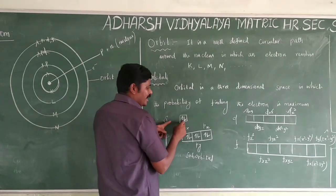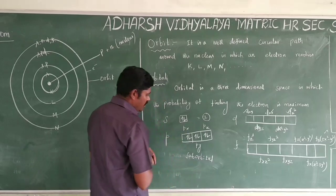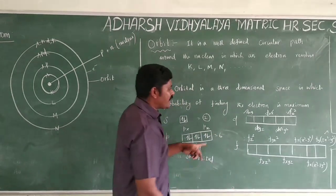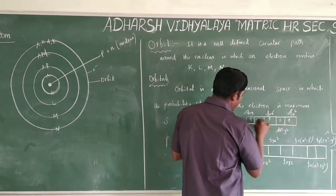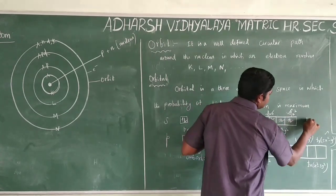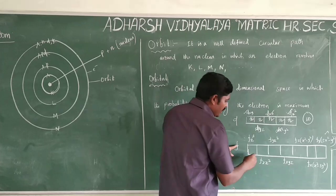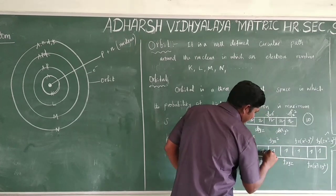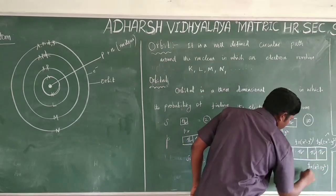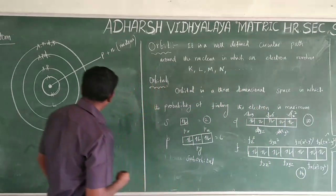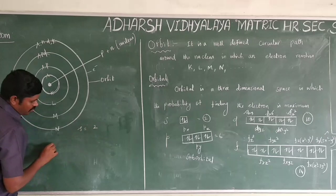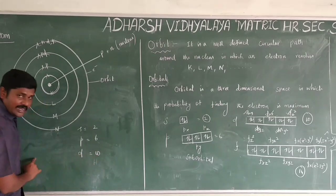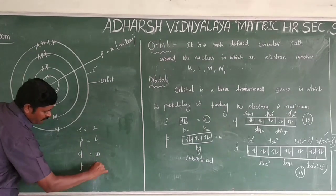The S orbital contains a maximum of 2 electrons. The P orbital contains a maximum of 6 electrons. The D orbital contains a maximum of 10 electrons. The F orbital contains a maximum of 14 electrons.